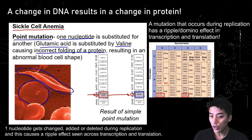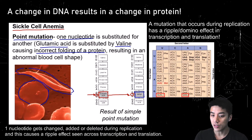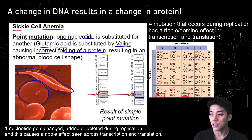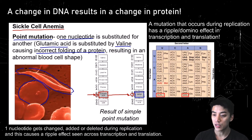One nucleotide gets changed, added, or deleted, and then we see this ripple effect that occurs. This happens during replication, and then when the cell is ready to make proteins and enzymes, it's going to cause errors during transcription and translation.